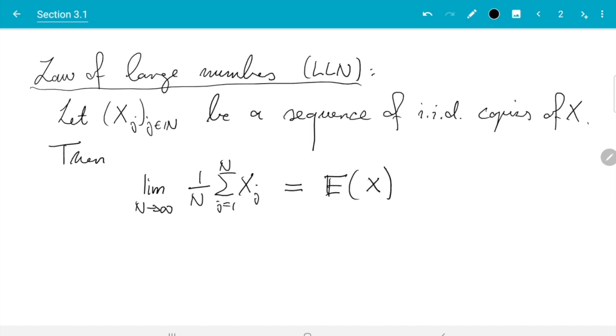This limit equals the expectation of x. And as on the previous page, we can do what I already started doing. We can squeeze in an f here. So if we take f of xj, then we get f of x.